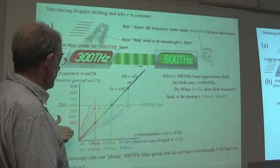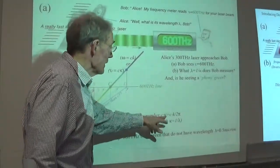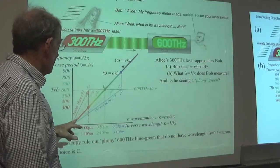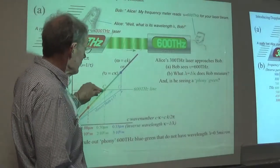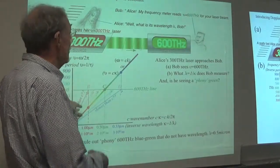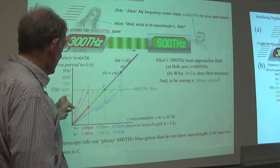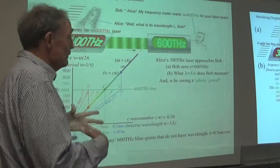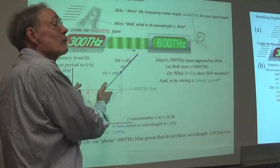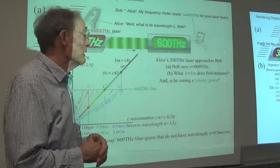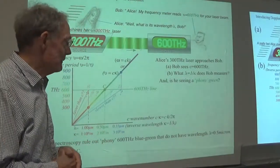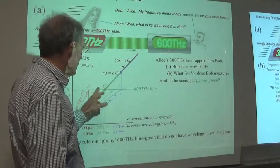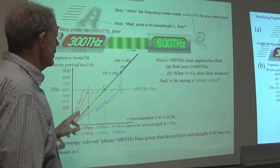We're going to plot terahertz versus kappa, the inverse wavelength. Somewhere on this line has got to be the 600 terahertz that Alice is giving him. The question is: could it be here or here or here? How many kinds of this color are there? If it's a really complicated piece of glass, several modes may carry 600 terahertz. But the vacuum is a lot simpler. Years of spectroscopy rule out any phony 600 terahertz - it's got to be on the light line, on the line omega equals ck.